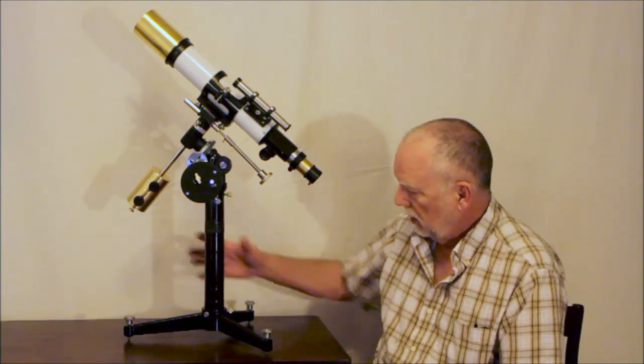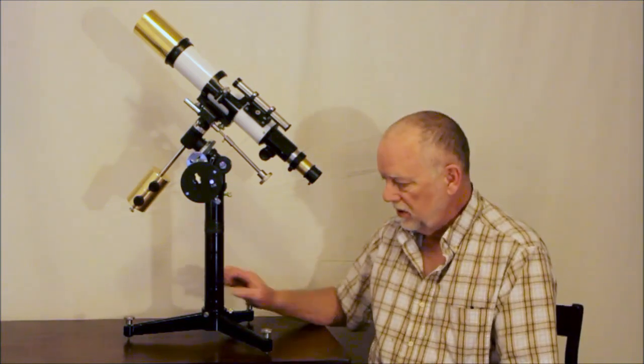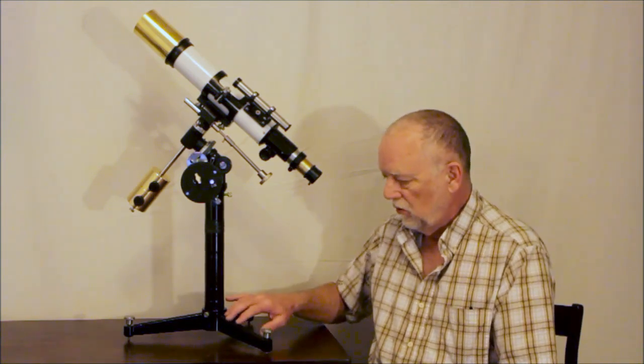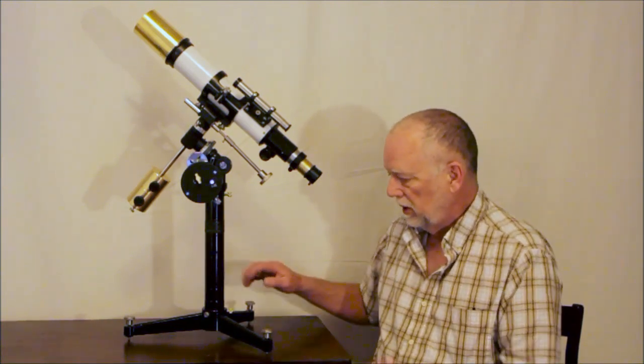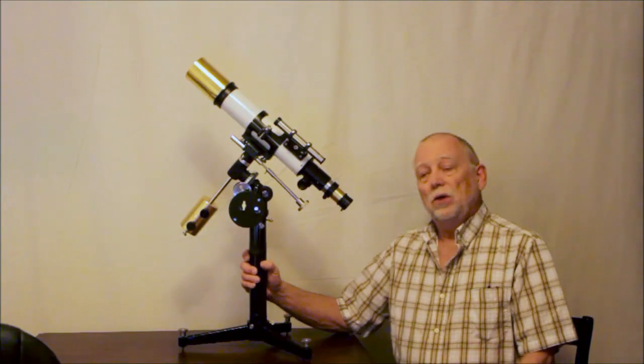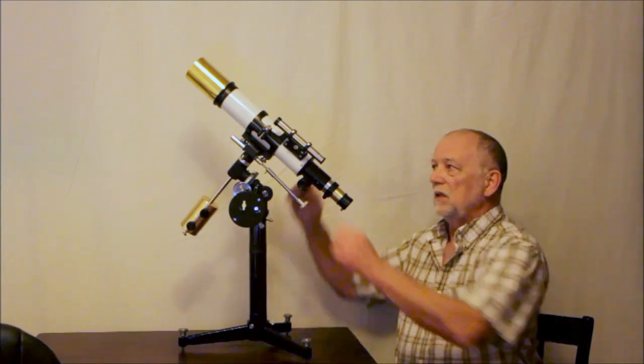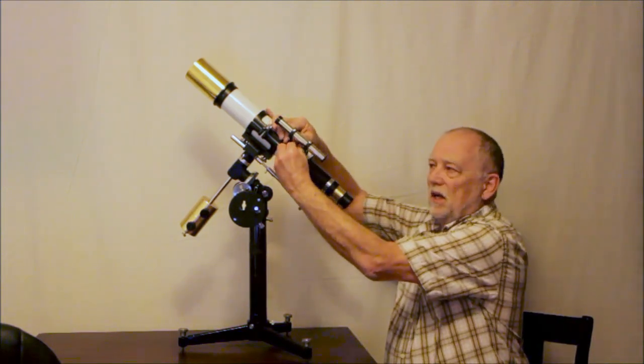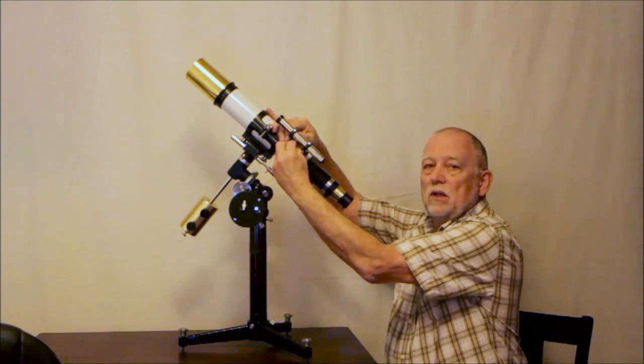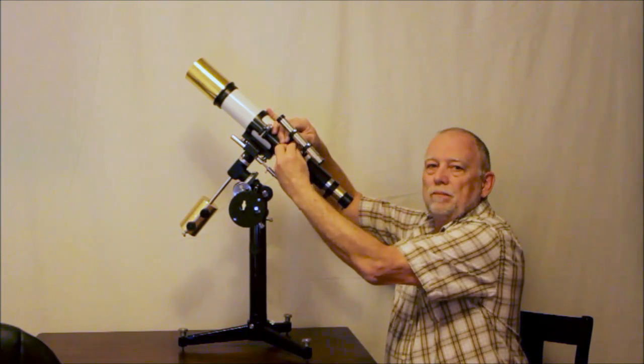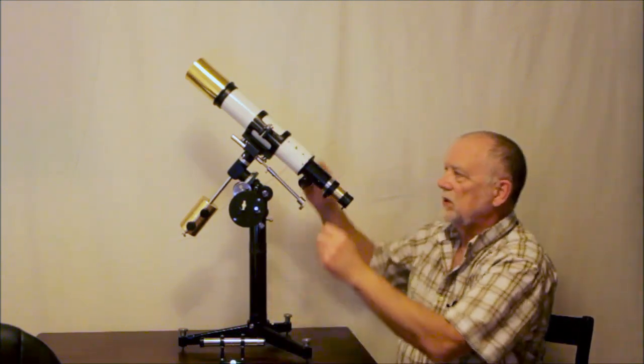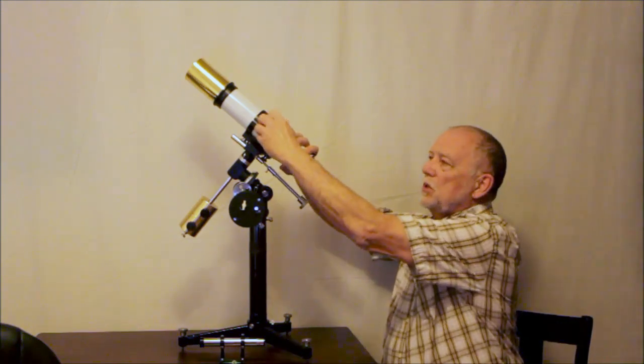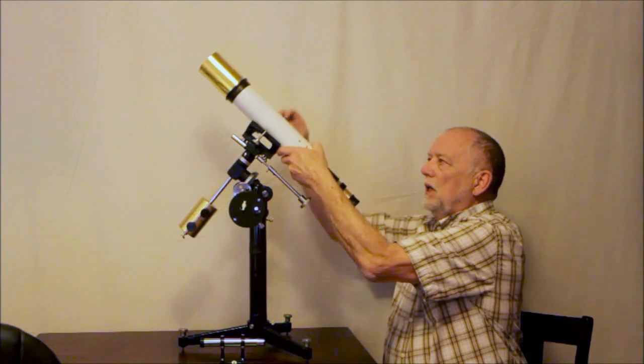This mount here, all of this is handmade by me. I made all this stuff using my lathe and milling machine. The knobs were commercially purchased and modified in many cases, but commercial knobs. And it all comes apart, so this will fit into a nice little box. I wanted to show you how this comes apart. It comes apart in lots and lots of little pieces.